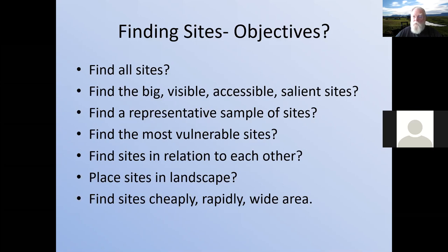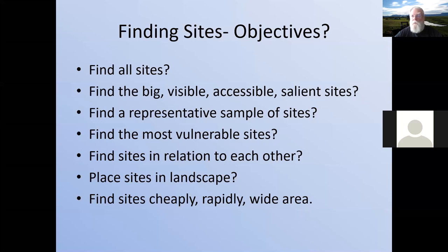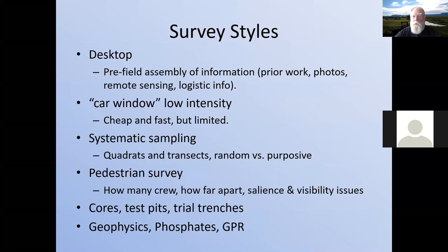Finding sites in relation to each other is another objective — are big sites and small sites part of the same settlement system? And placing sites in landscape: which ones are next to streams, near passes, near trails, or next to good agricultural land? Then of course there's the goal of finding sites cheaply, rapidly, over a wide area — the old joke being 'pick two,' because it's tough to combine all three. This leads to thinking about survey styles, which we can also think of as phases of surveying.